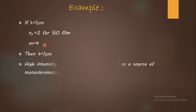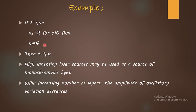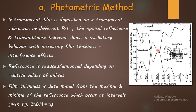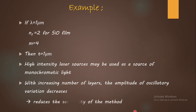High energy or high intensity laser sources can also be used as monochromatic light sources for thickness determination. With increasing number of layers, as thickness increases, the amplitude of oscillatory variation (ΔR or ΔT) decreases — this is evident from the graph. This reduction in amplitude reduces the sensitivity of the method, so the photometric method is less sensitive for thicker films, which is its main limitation.